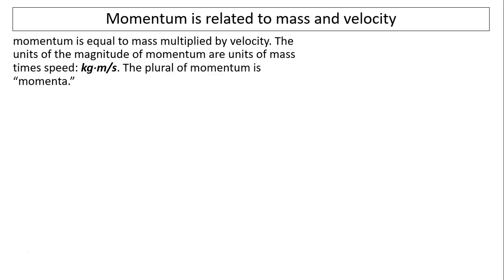Momentum is related to mass and velocity. Momentum is equal to mass multiplied by velocity. The unit of momentum is kilograms times meters per second. The plural of momentum is momenta. So momentum equals m times v. As this formula indicates, momentum is a vector quantity — it has the same direction as velocity.